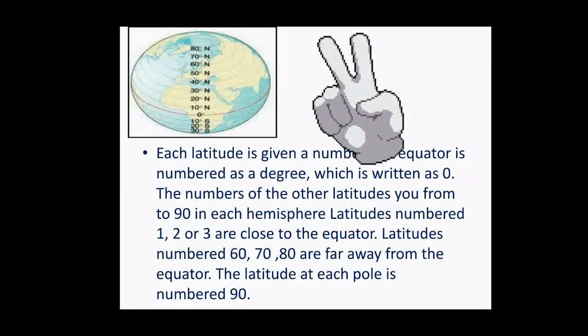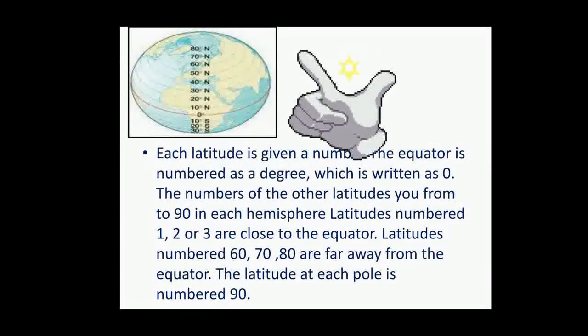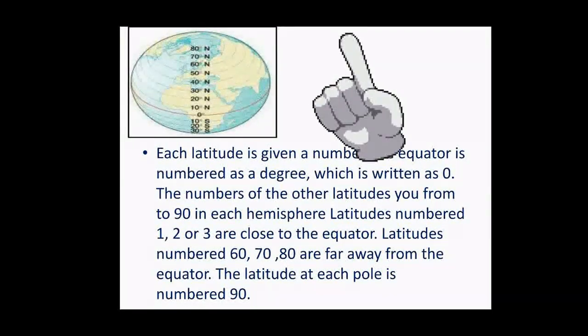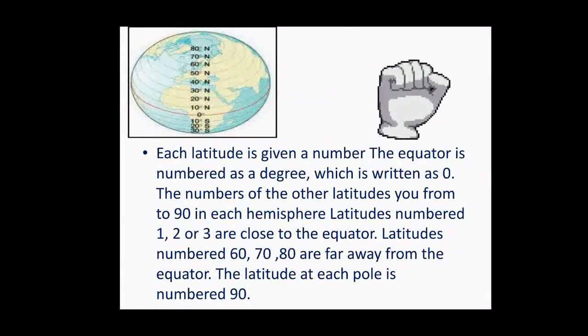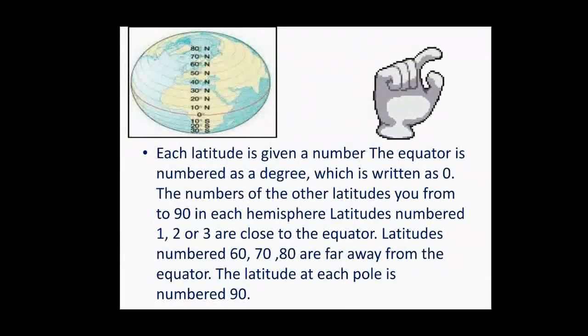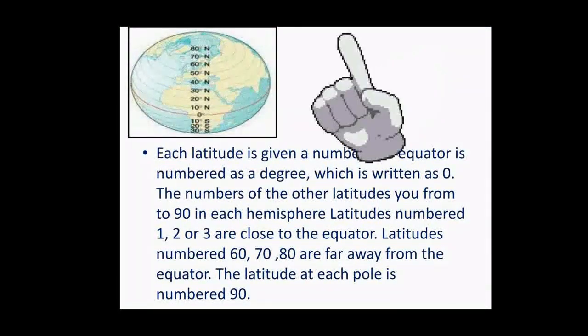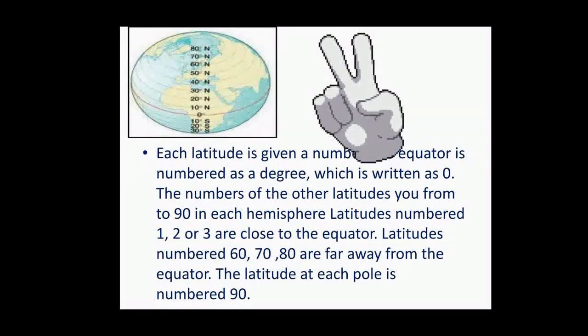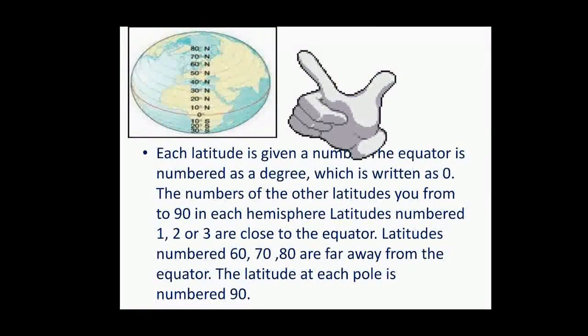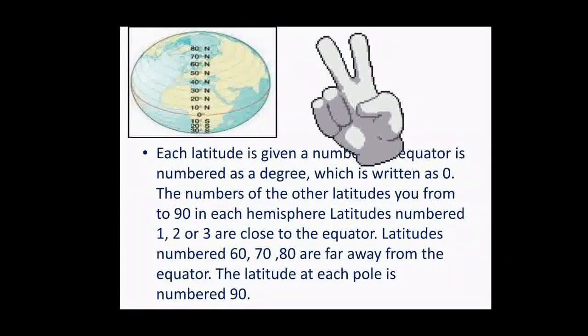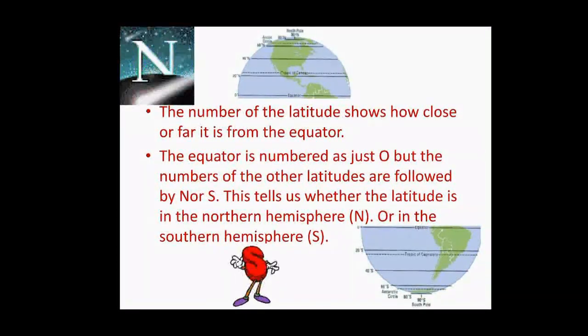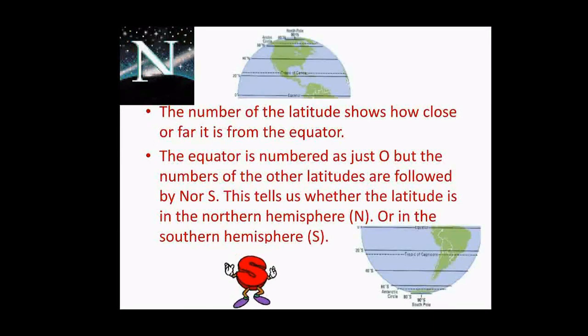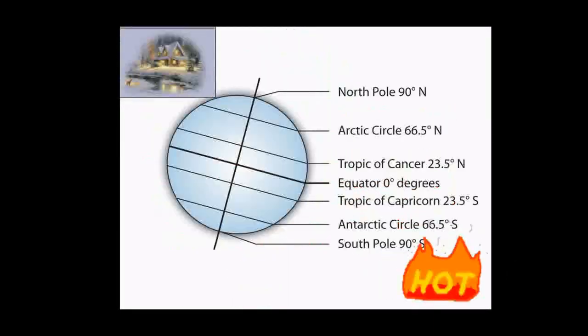Each latitude is given a number. The equator, center one, is numbered as zero degree. And the other latitudes, which start above the equator and end at the North pole, count 90. The same way, from the equator to the South pole, all the lines of latitude count 90. So, 90 Northern Hemisphere latitudes and 90 Southern Hemisphere latitudes and the center equator. Totally 181 latitudes in total. The Northern Hemisphere latitudes are all measured in the direction North. The same way, Southern Hemisphere latitudes are all measured in the direction S.